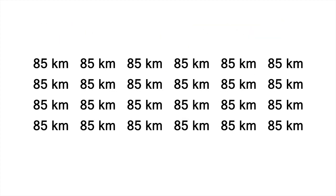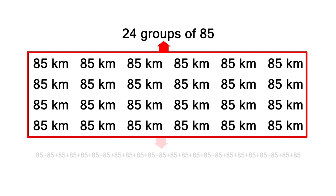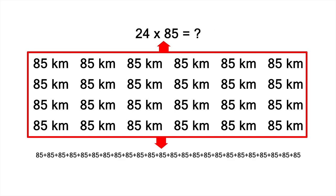Let's use this in our present problem. We have 24 groups of 85, so we could use repeated addition to add them up. But a quicker way is to solve the equivalent multiplication problem: 24 times 85. Let's do it.